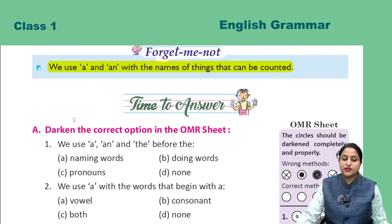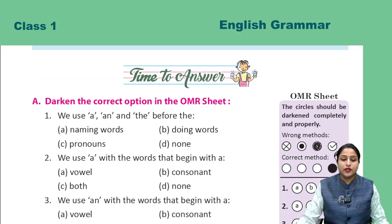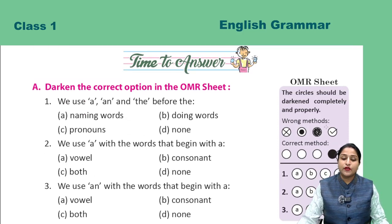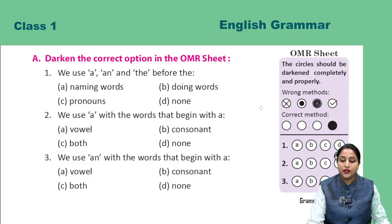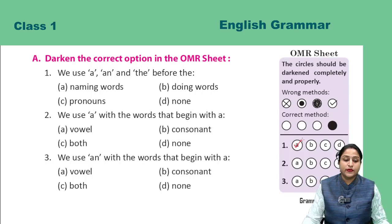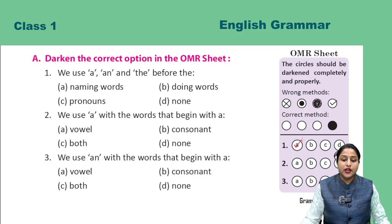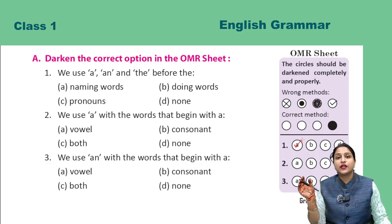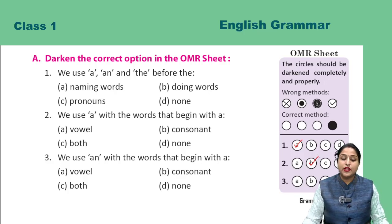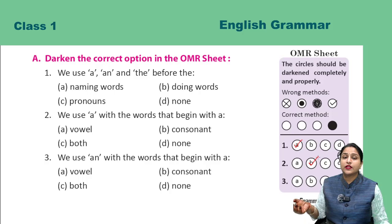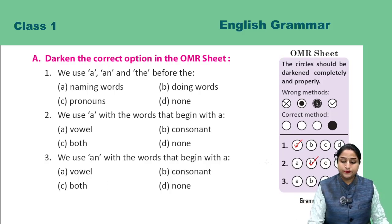Now it's time to answer. Exercise A: Darken the correct option in the OMR sheet. OMR sheet aapko given hai, isme hum correct answer ko mark karenge. First: we use A, N, and The before the — hum A and The kisse pehle lagate hain? Naming words se. So correct answer is A. Next: we use A with the words that begin with consonant — hum A kaunse words ke saath lagate hain? Jo consonant se begin hote hain. Answer is B. Next: we use AN with words that begin with vowel — hum AN kaunse words ke saath lagate hain? Jo vowel se begin hote hain. Answer is A.